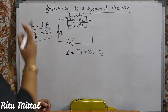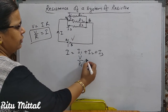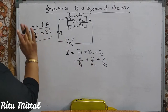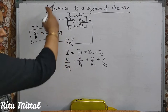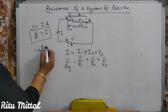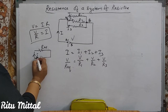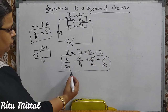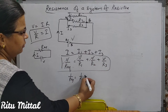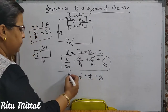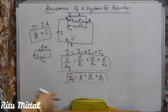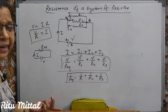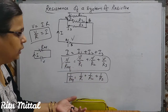Replace using V = IR, so V/R = I. Toh bas replace kar do: i1 = V/R1, i2 = V/R2, i3 = V/R3. Aur i = V/R equivalent. V ko common nikaal lo. So 1/R equivalent = 1/R1 + 1/R2 + 1/R3. Chahe 3, 4, 5 jitni bhi resistance ho — unka sabka reciprocal karke add karna hai to get 1/R equivalent. Phir R equivalent nikalne ke baad reciprocal lo.